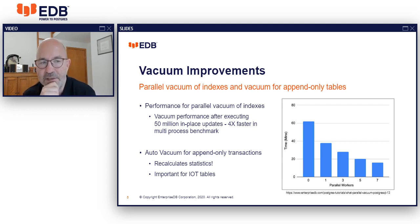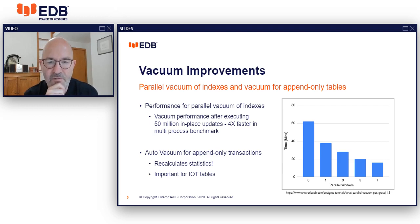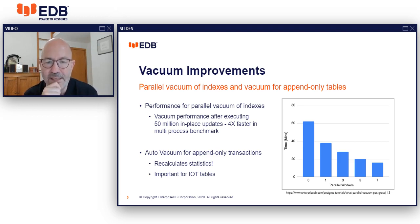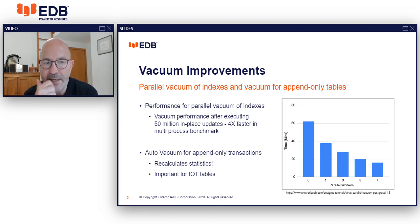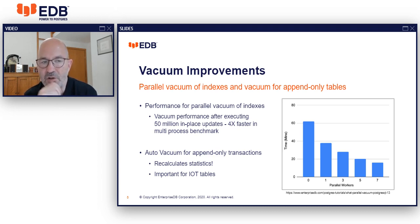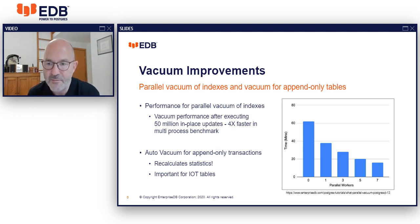Another really important, perhaps less obvious improvement is autovacuum for append-only transactions. You may wonder what kind of bloat append-only creates. The really important thing is that statistics are now automatically being recalculated and kept up to date for append-only tables. In IoT-type workloads where you just append a lot of time-series data, this is really important to maintain your performance automatically.